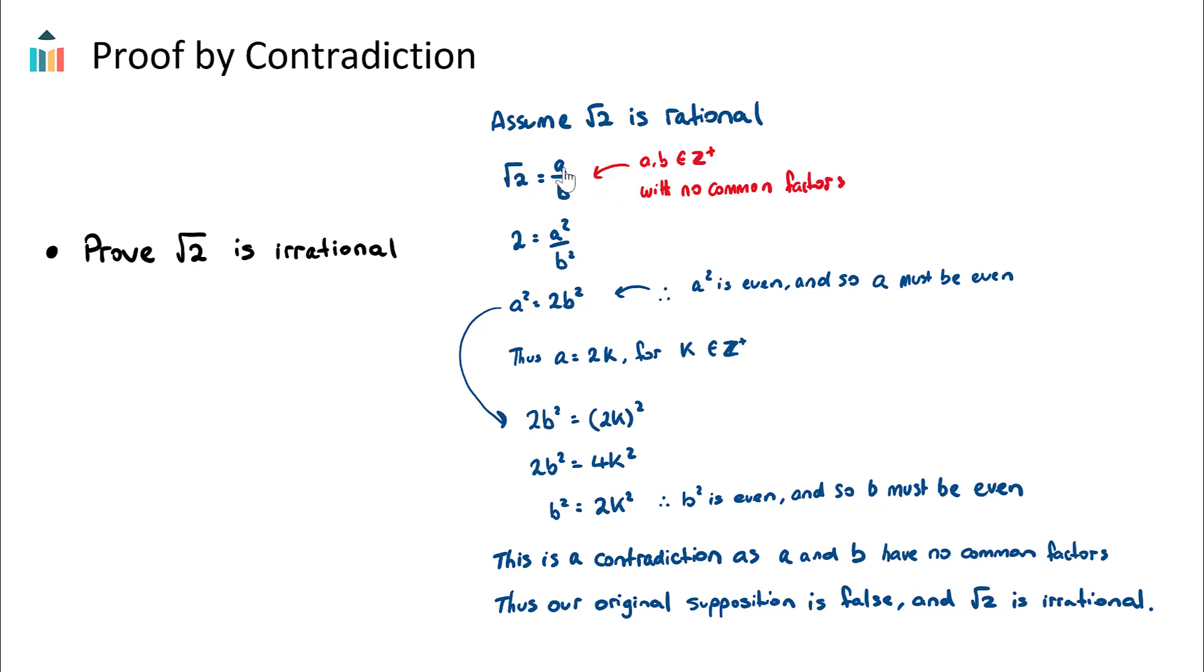So this is assuming that √2 is rational by expressing it as a over b, and it's very important here that a and b must have no common factors.